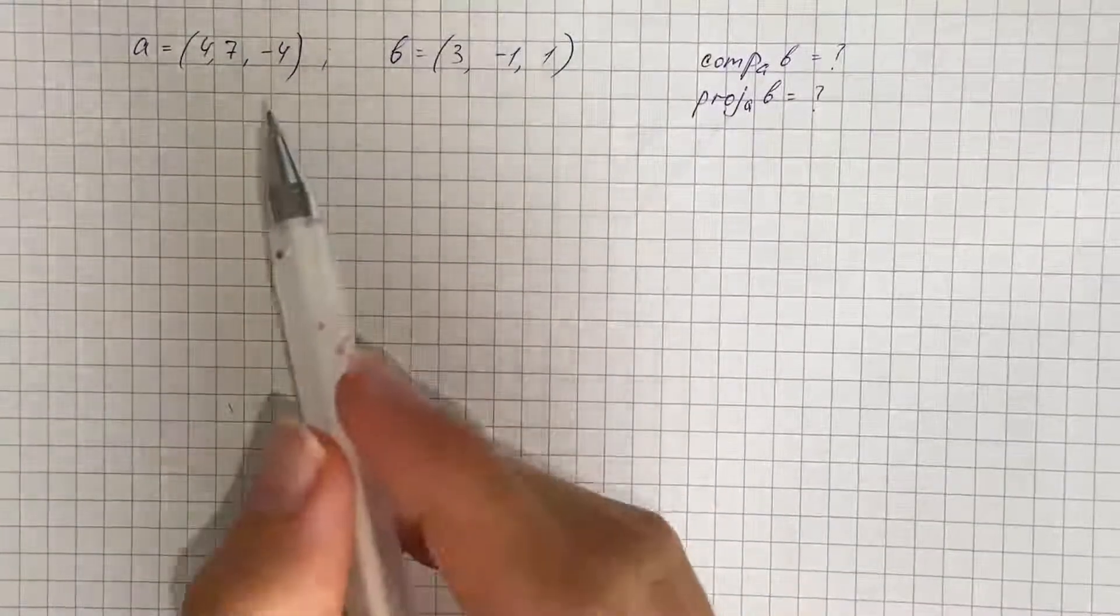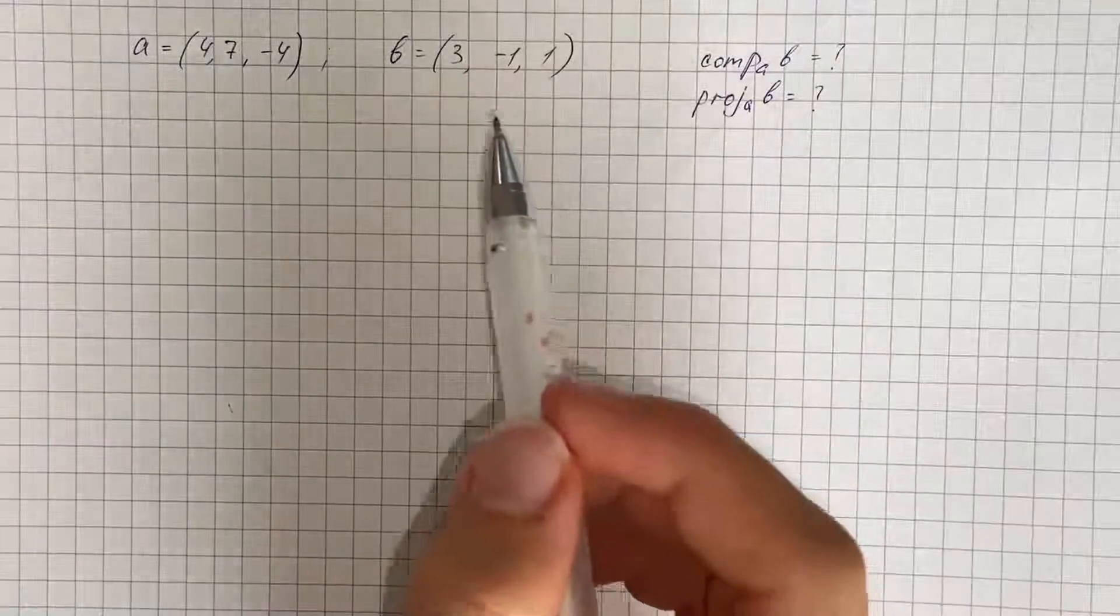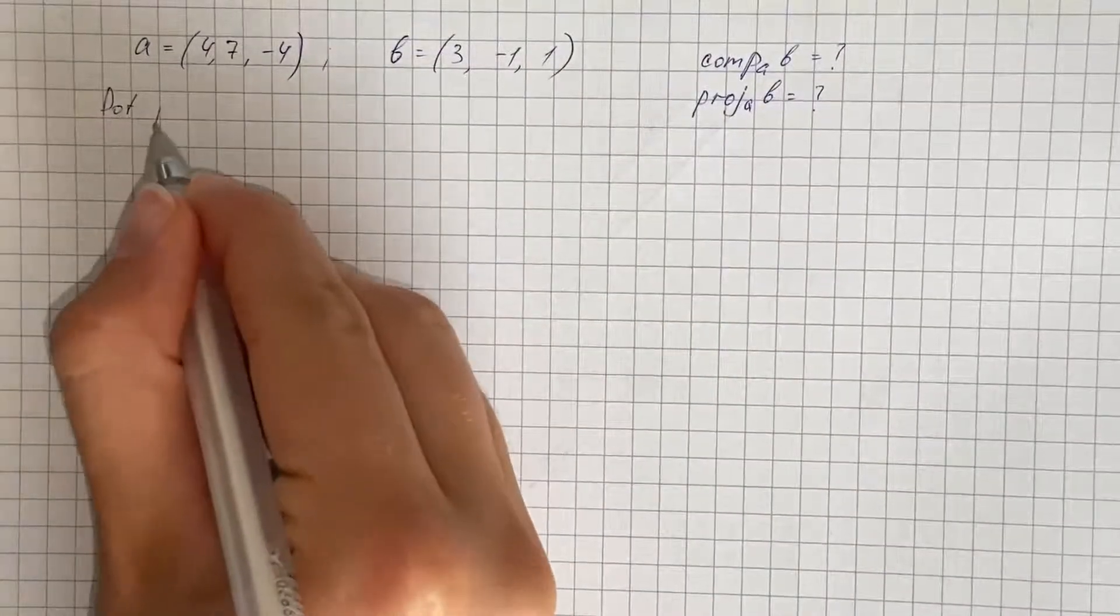We're given two vectors and we have to find the scalar and vector projections of b onto a. So first we're going to find dot product.